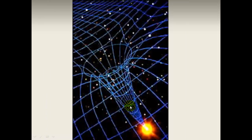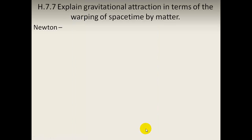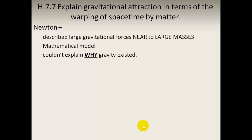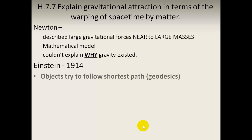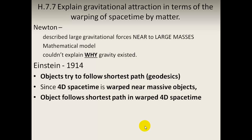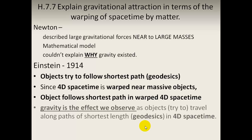An extreme curvature of space-time leads to black holes, which we'll discuss next. To explain gravitational attraction in terms of warped space-time: Newton described large gravitational forces near large masses and gave the mathematical model F = GM/r², but couldn't explain why gravity existed. Einstein, in 1914, described that objects follow the shortest path — geodesics — in four-dimensional space-time. Since space-time is warped near massive objects, the object follows the shortest possible path in that warped geometry, and gravity is the effect we observe as objects travel along those geodesics.